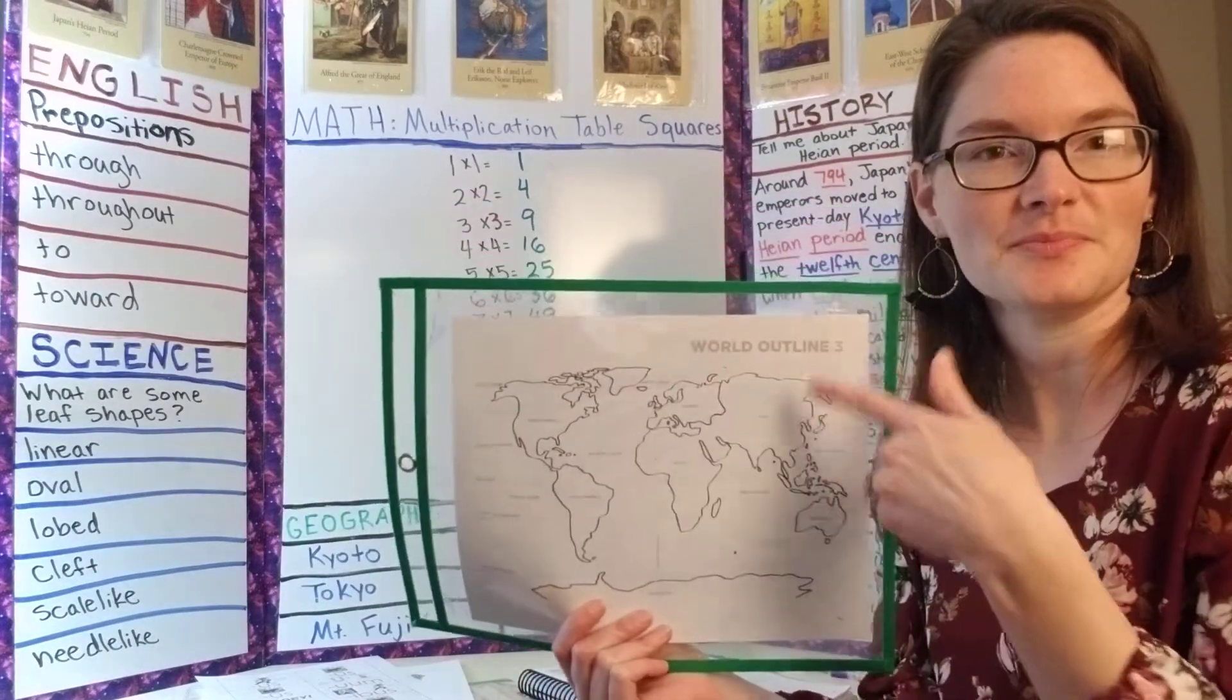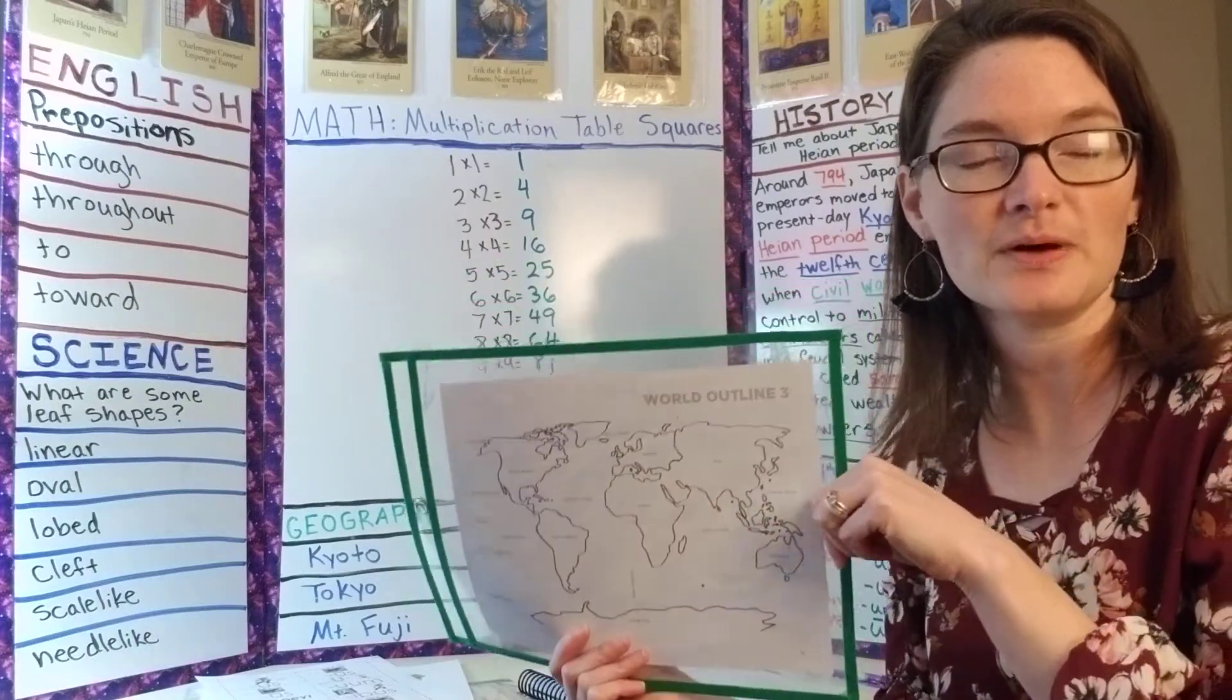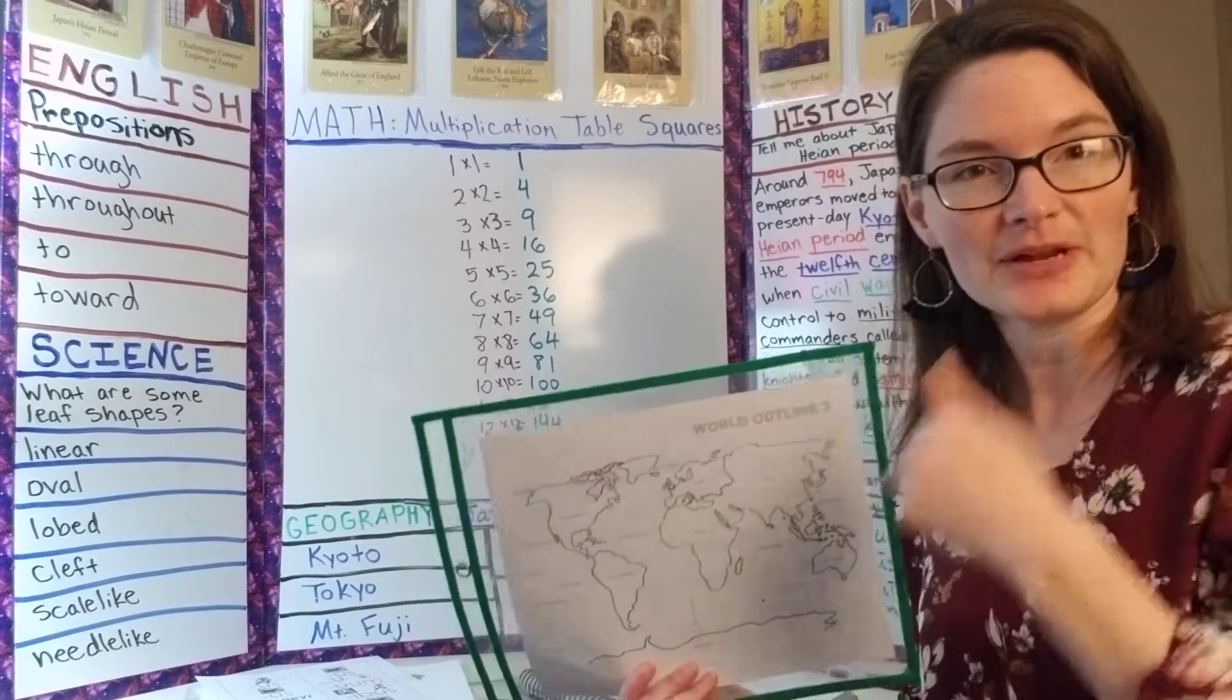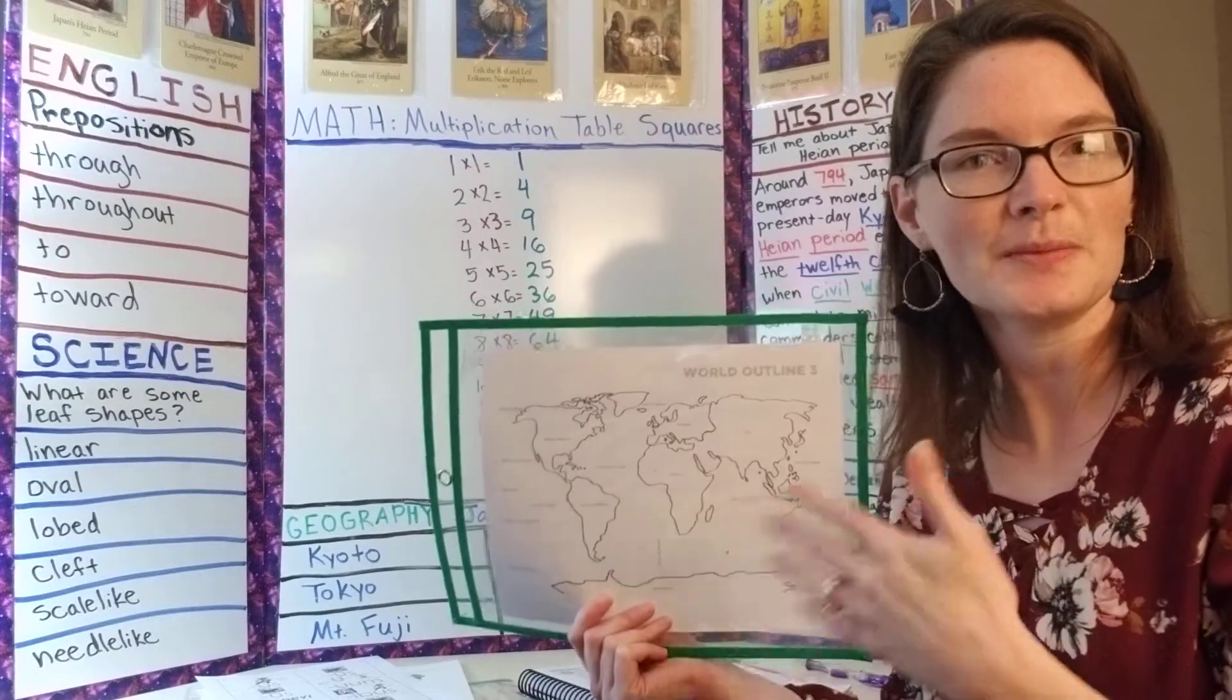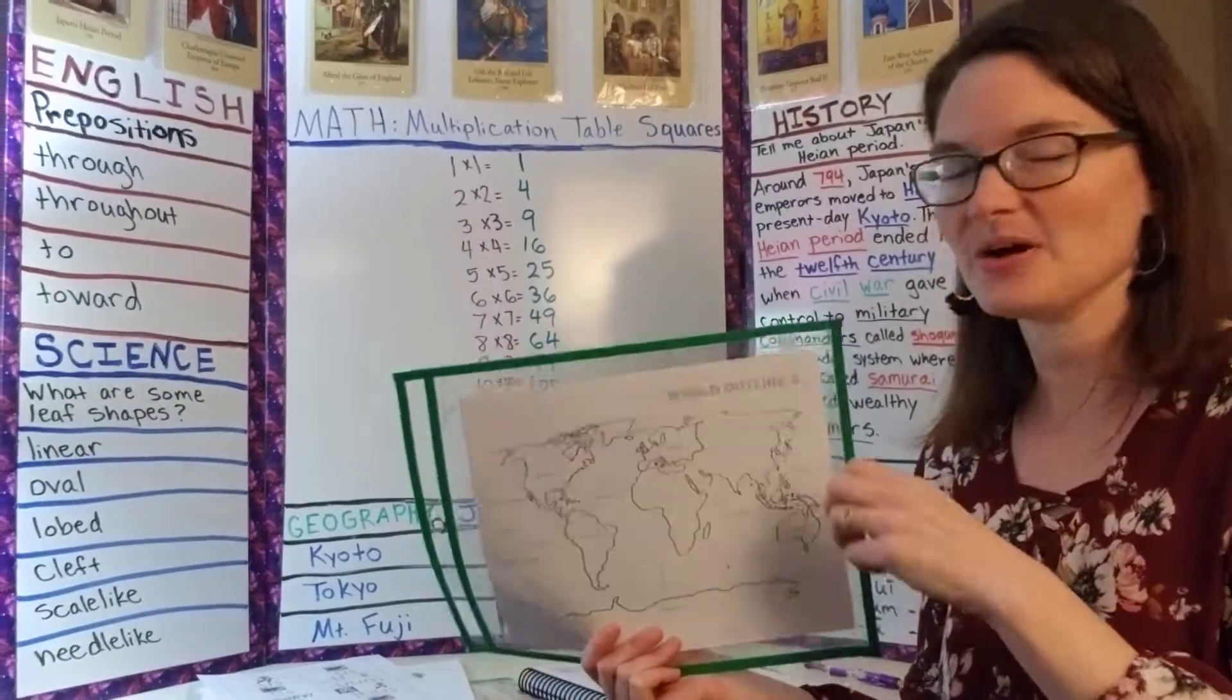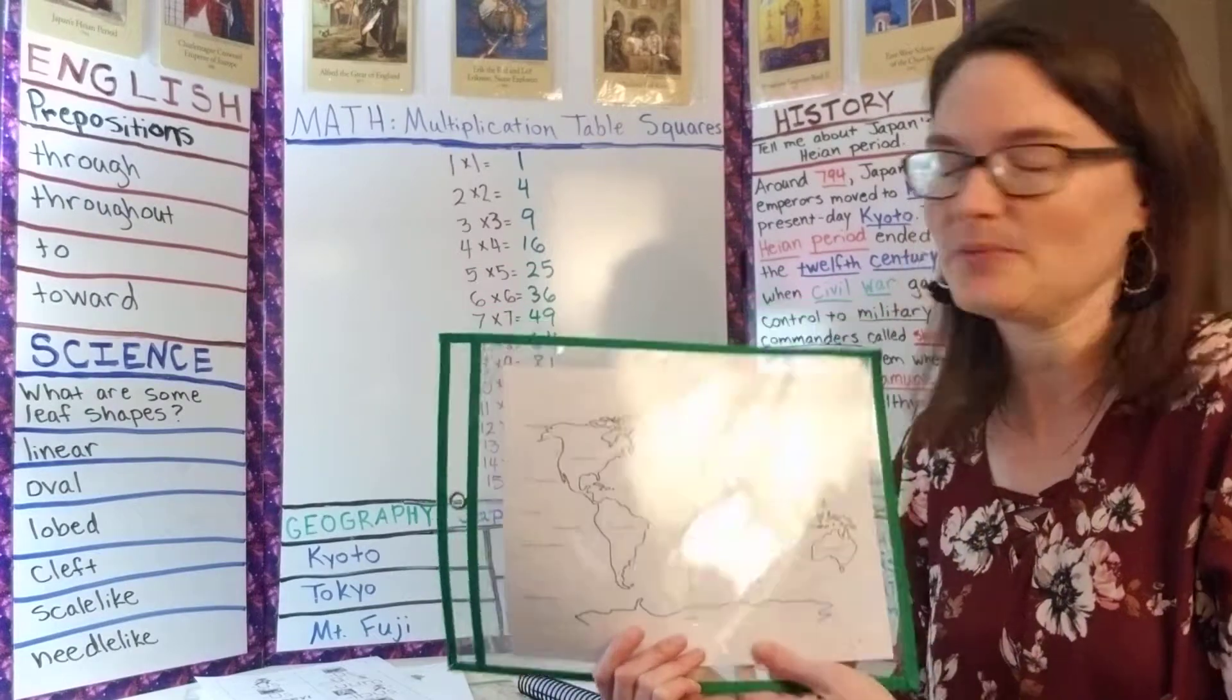So they took the dry erase markers and they outlined the maps while we went through review work. With the memory work, we kind of went through it by subject and went a little more quickly. We could sing through the preposition song and do the Latin really quickly and sing through the timeline song. We just kept it simple for review this last week and that worked out pretty well.